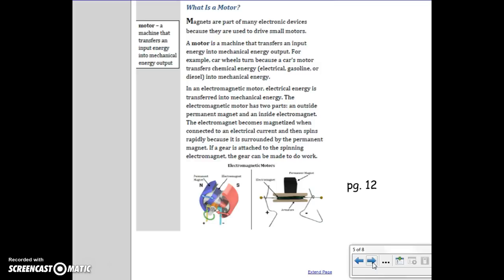What is a motor? Magnets are part of many electronic devices because they are used to drive small motors. A motor is a machine that transfers an input energy into mechanical energy output. For example, car wheels turn because a car's motor transfers chemical energy, electrical, gasoline, or diesel, into mechanical energy.